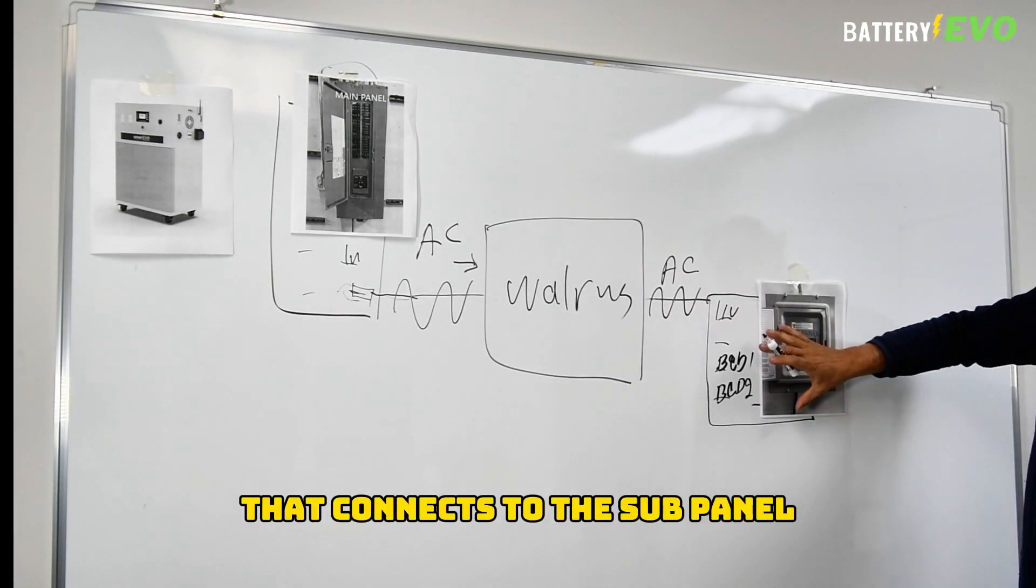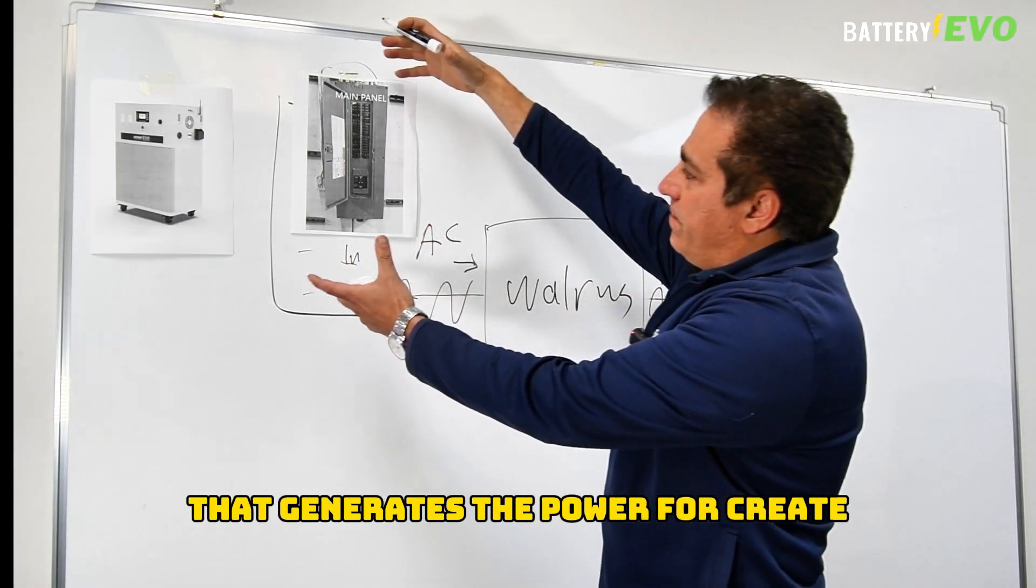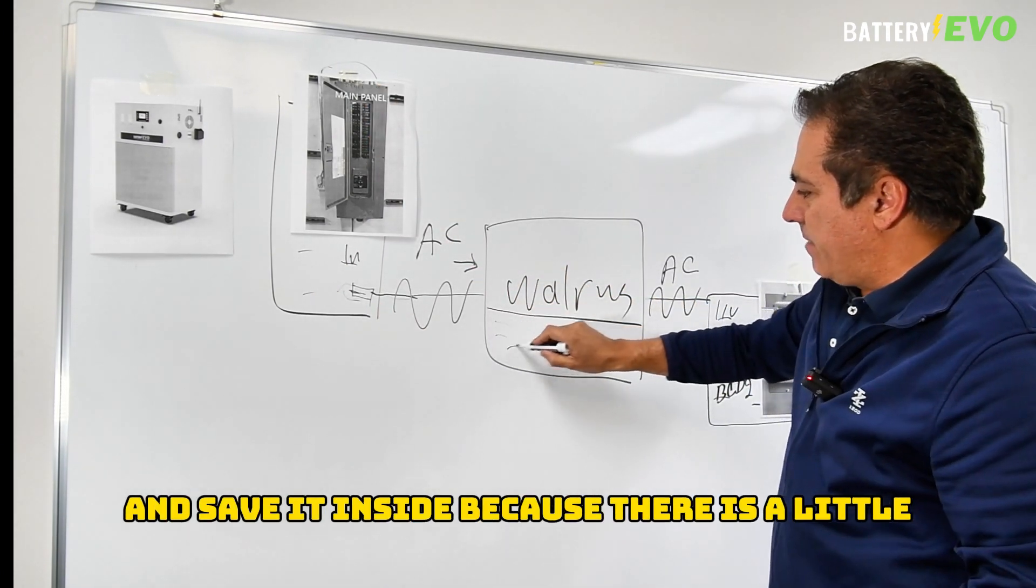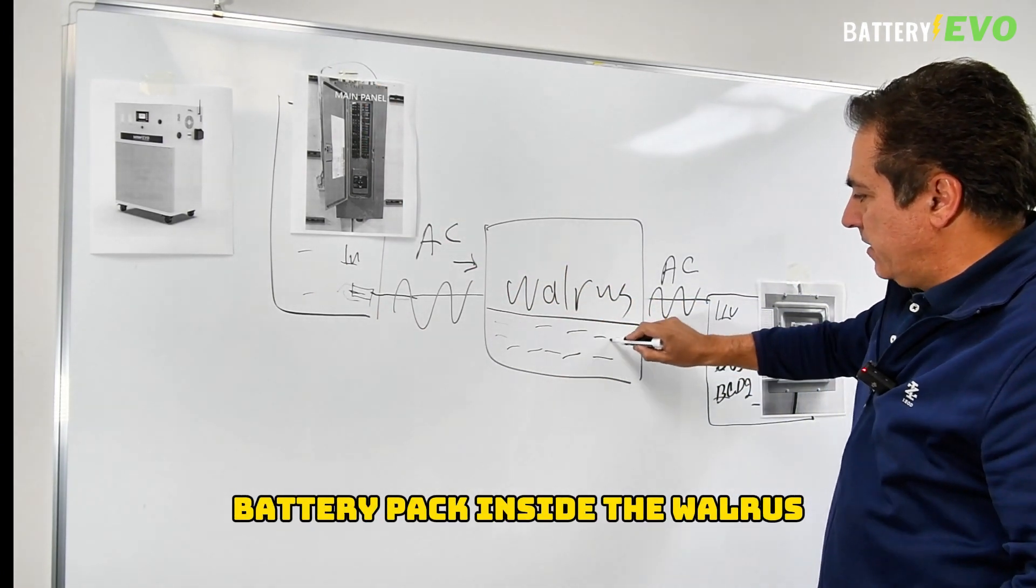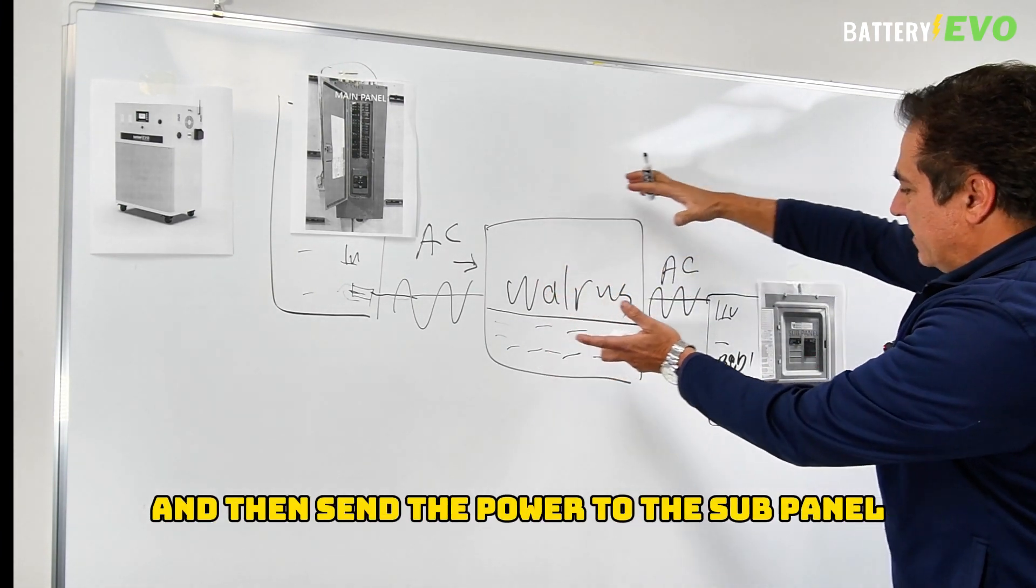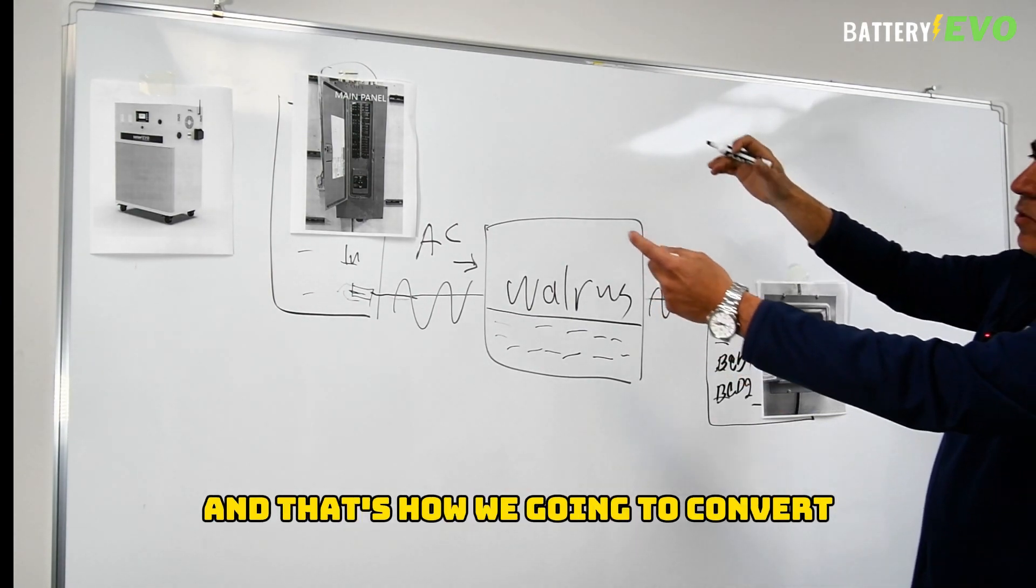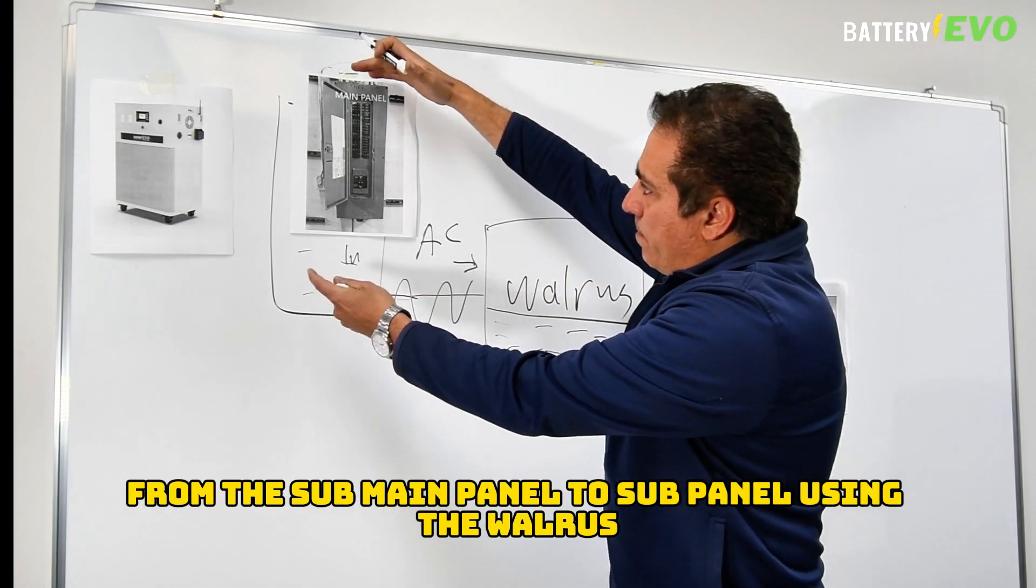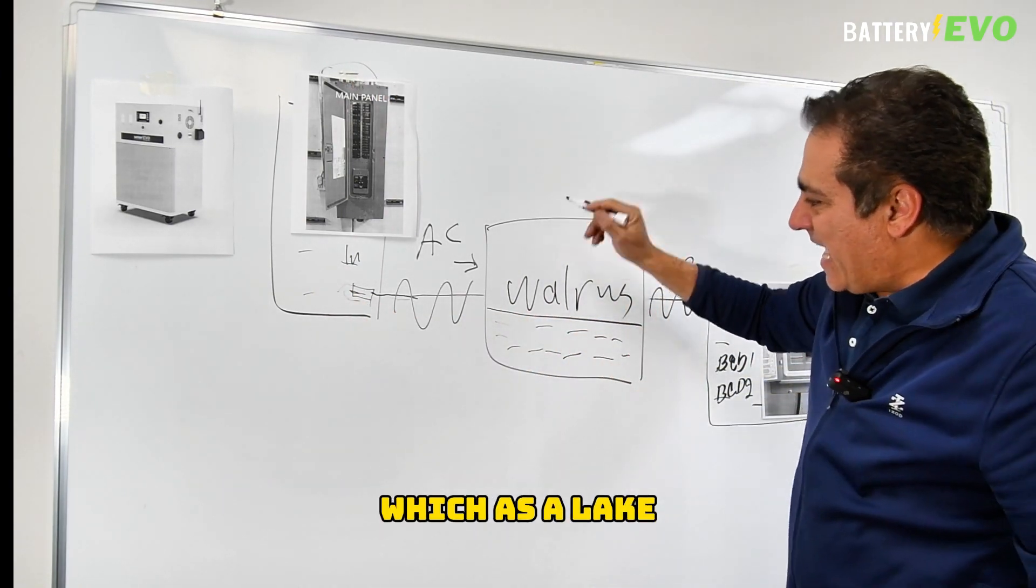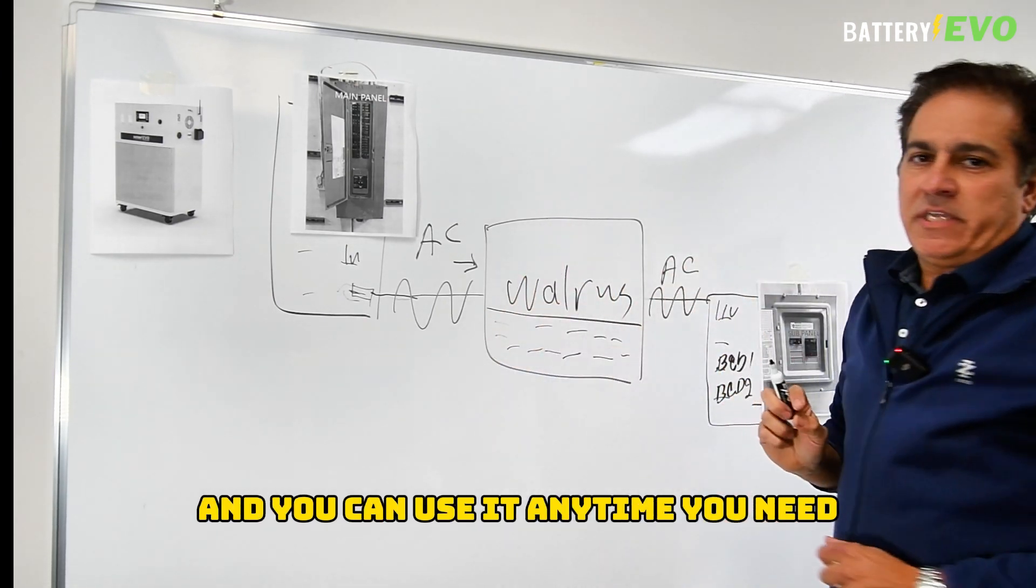The AC output connects to the sub panel. The wireless is like a lake that generates the power to create collective power from the main electrical panel and save it inside because there's a lithium battery pack inside the wireless. Once the battery pack is full, it's saved and then sends the power to the sub panel, and the sub panel sends it to part of the house. That's how we're going to convert from the main panel to sub panel using the wireless, which acts like a lake - it's like a pool of electricity that can save and you can use anytime you need.